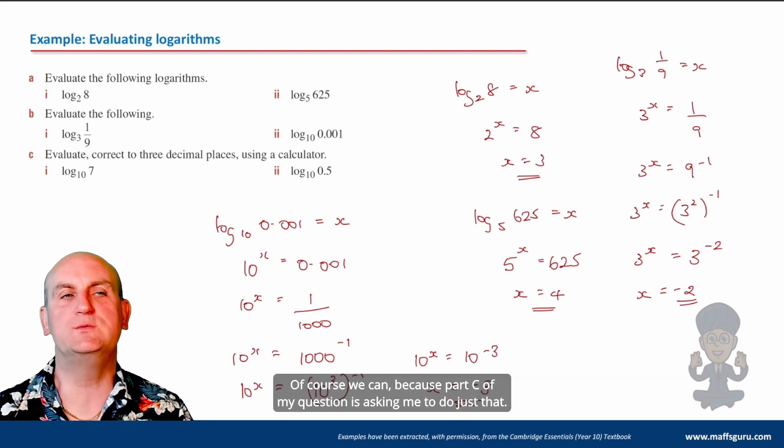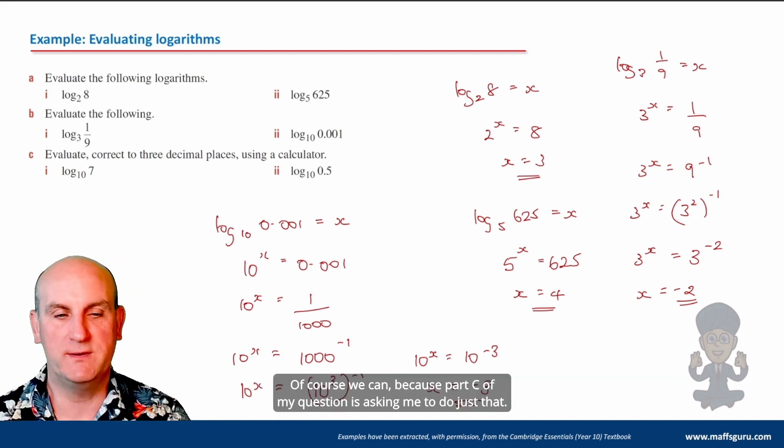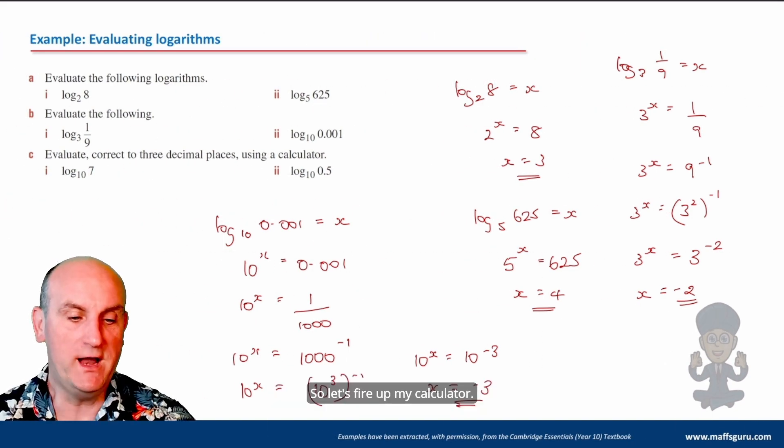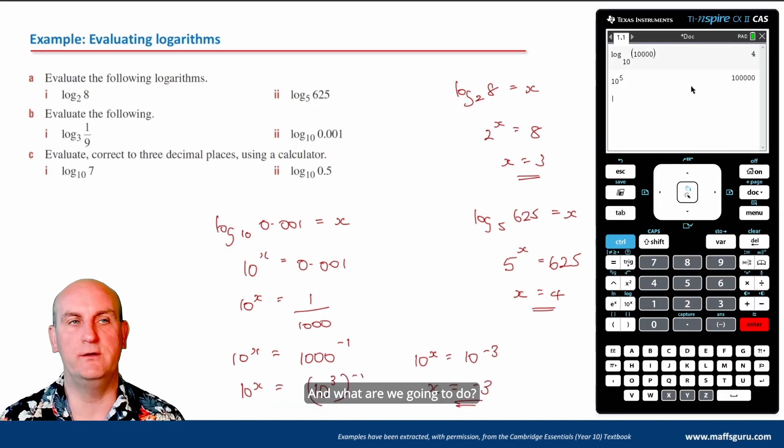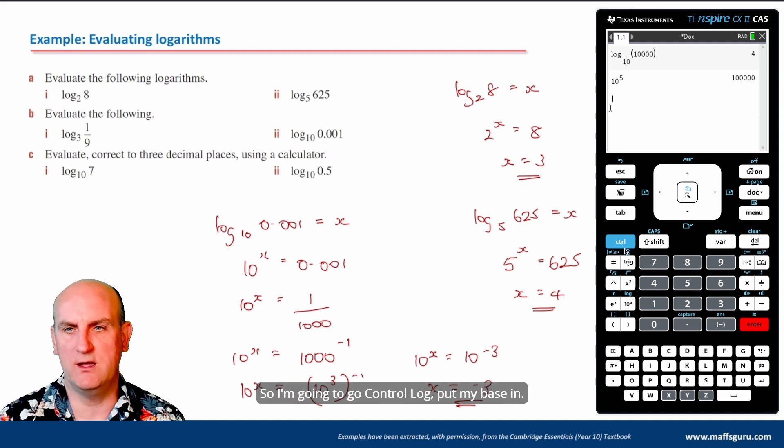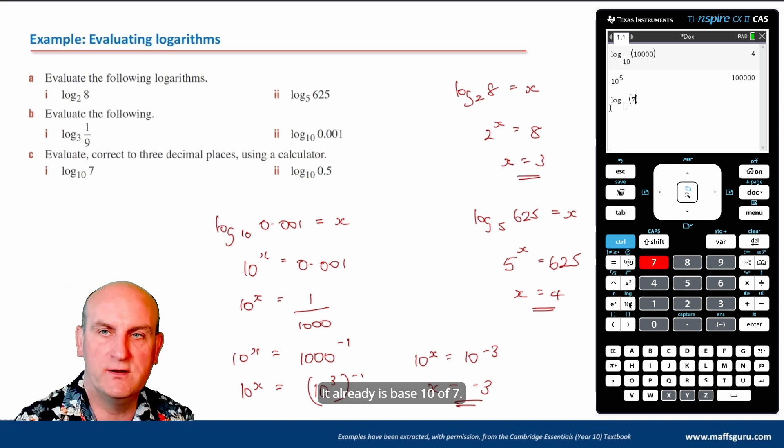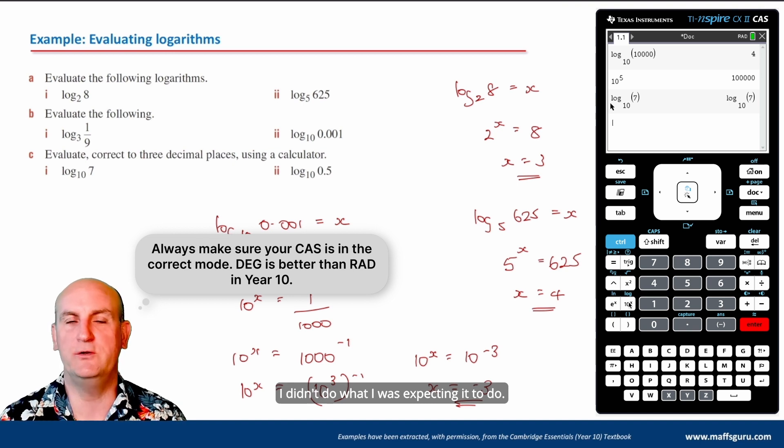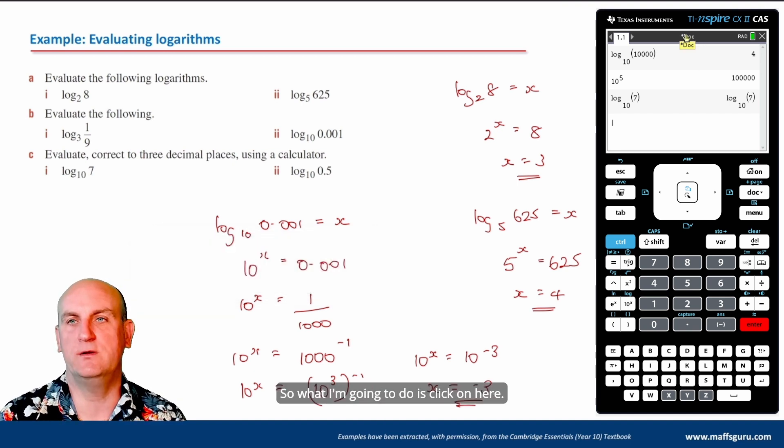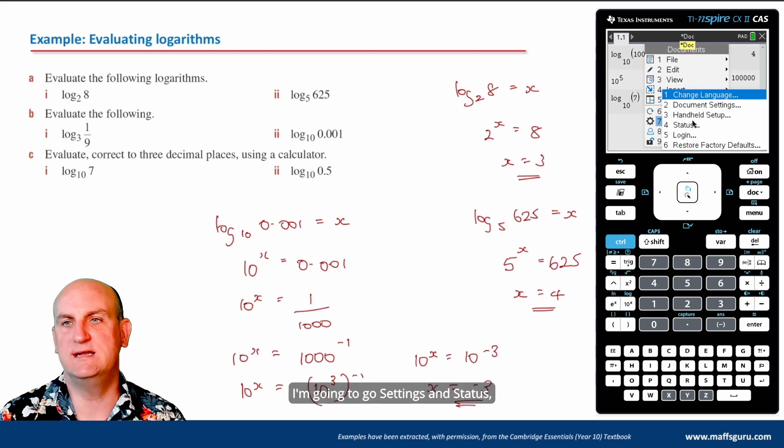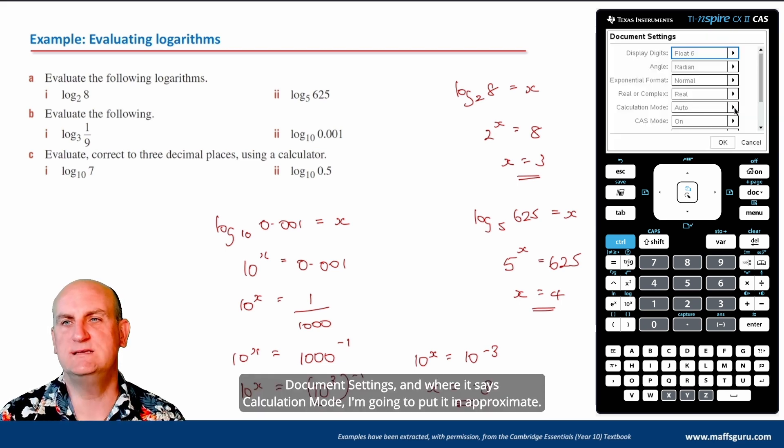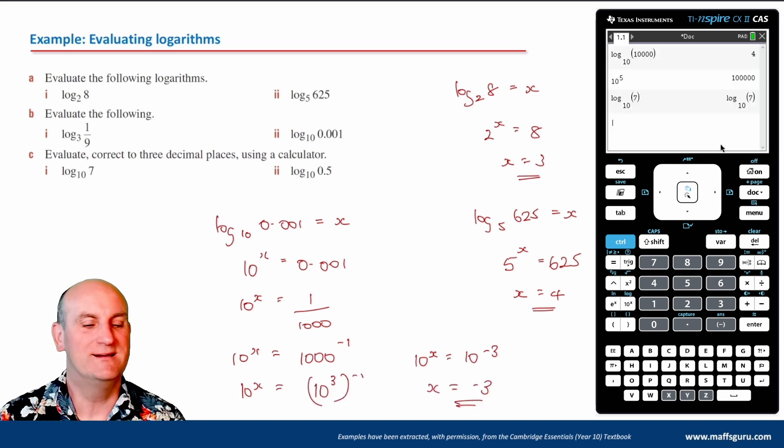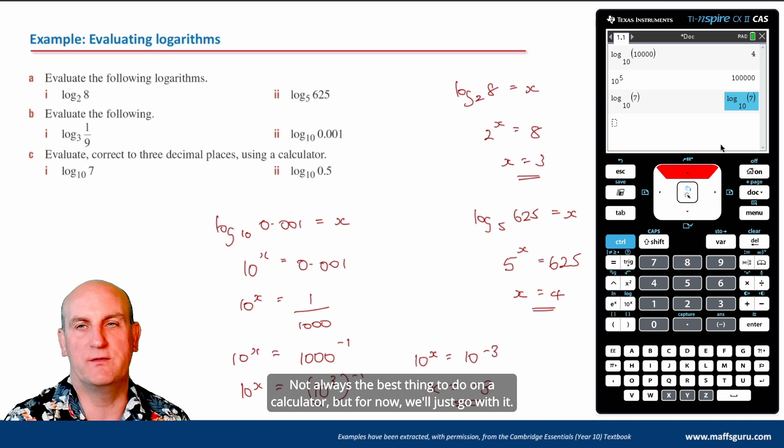Now again, can we use our calculator to do that? Of course we can because part C of my question is asking me to do just that. So let's fire up my calculator. And what are we going to do? Basically just type it in. So I'm going to go control log, put my base in. It already is base 10 of 7. Hit enter. And hold on a moment. I didn't do what I was expecting it to do.